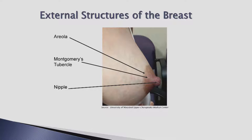The nipple is located in the center of the areola and contains about four to nine milk duct openings. The nipple and the areola are made up of erectile smooth muscles. A bundle of these muscles beneath the nipple contracts, causing the nipple to become firm and erect with stimulation. The areola, the pigmented area surrounding the nipple, becomes darker with pregnancy. It may be small or large and does not impact milk production.